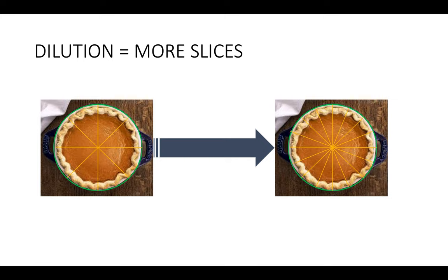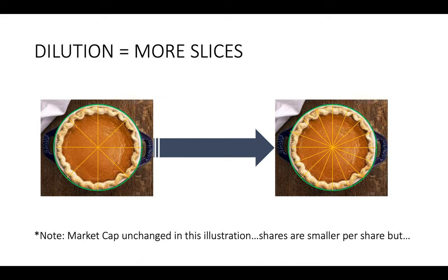Staying real simple here — dilution is just more slices. You've taken the same pie, the market cap, the market value of a company, and you've just split it into more shares. In this illustration, we're not changing the market cap. That pie stayed the same — we just cut it into more slices.